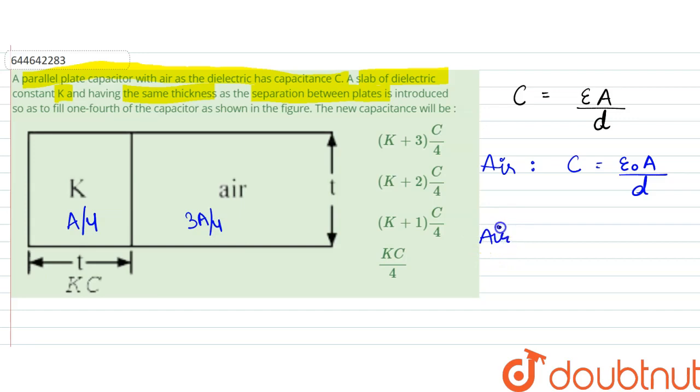Finally, for air we can write C_a that would be equal to epsilon naught three A by four d, d itself. This would be equal to C_k.